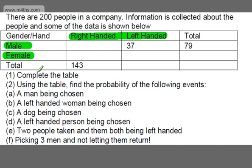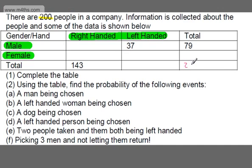We're asked to complete the table. Often people seem to miss something right here: we're told there are 200 people in the company, so straight away I can fill out the total as 200. I can then work out: 200 minus 79 gives 121, so the total number of females is 121. And 143 from 200 gives 57 — so 57 people are left-handed.